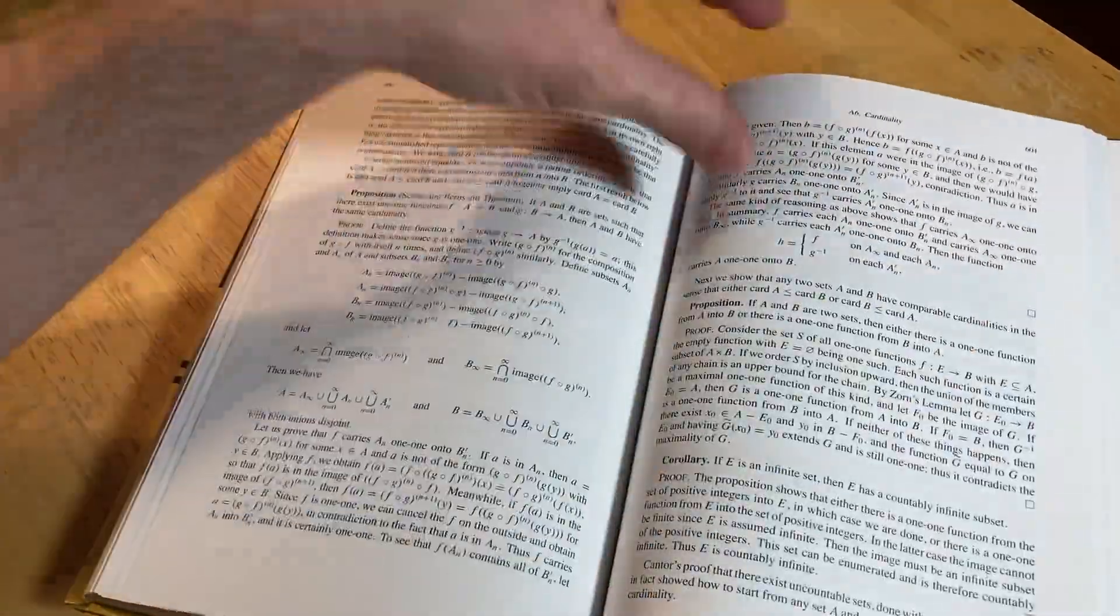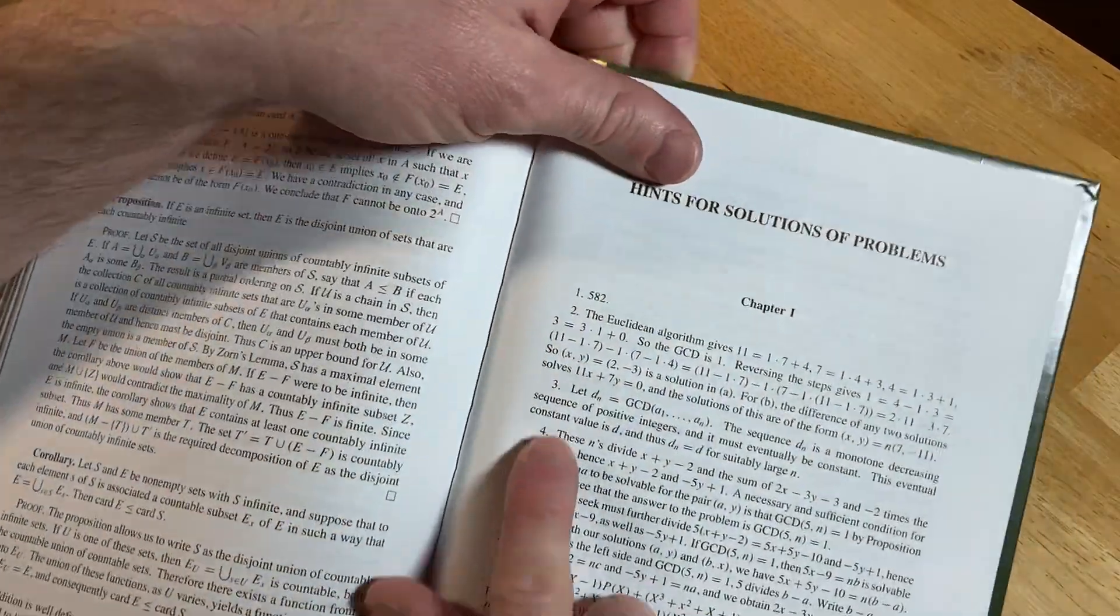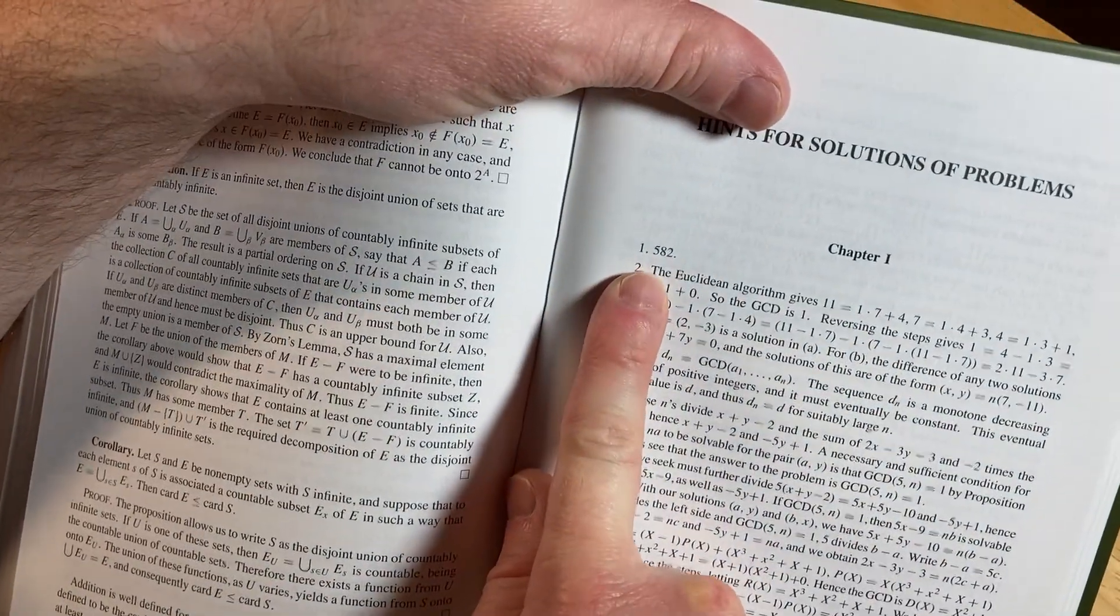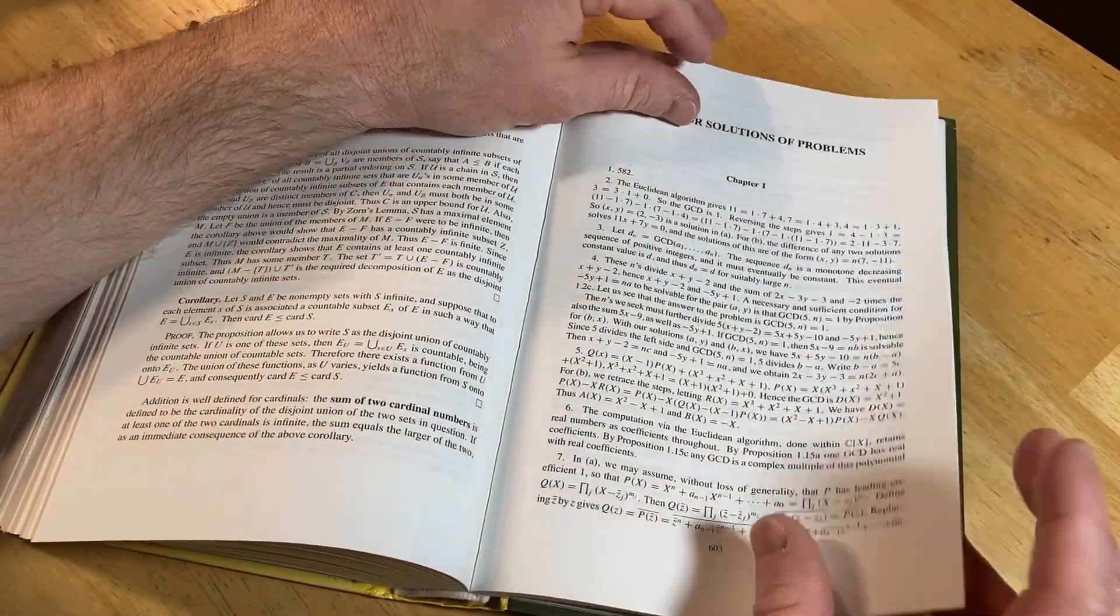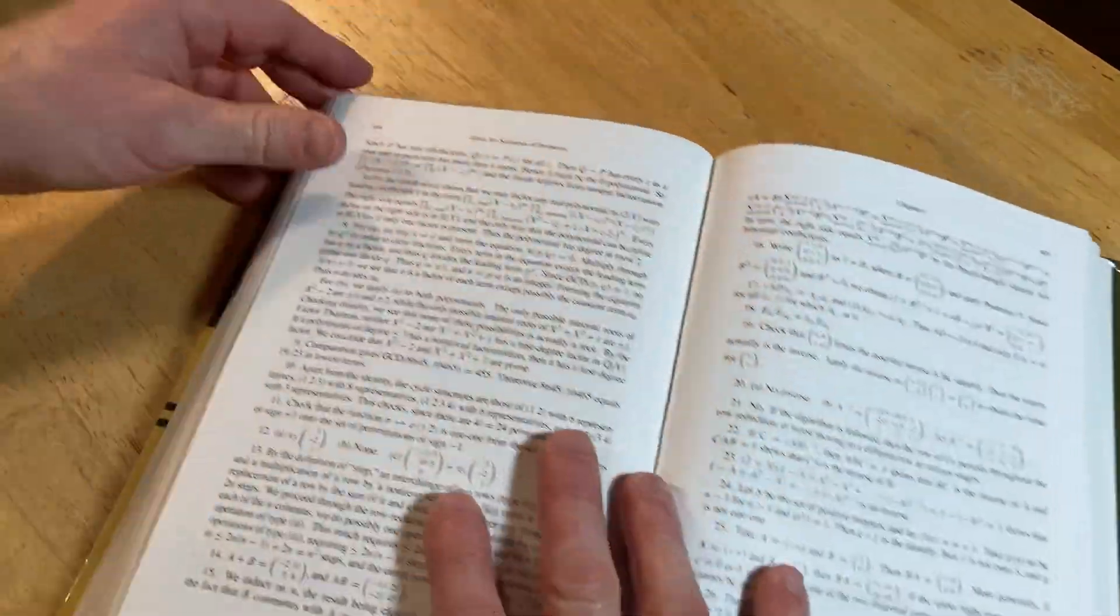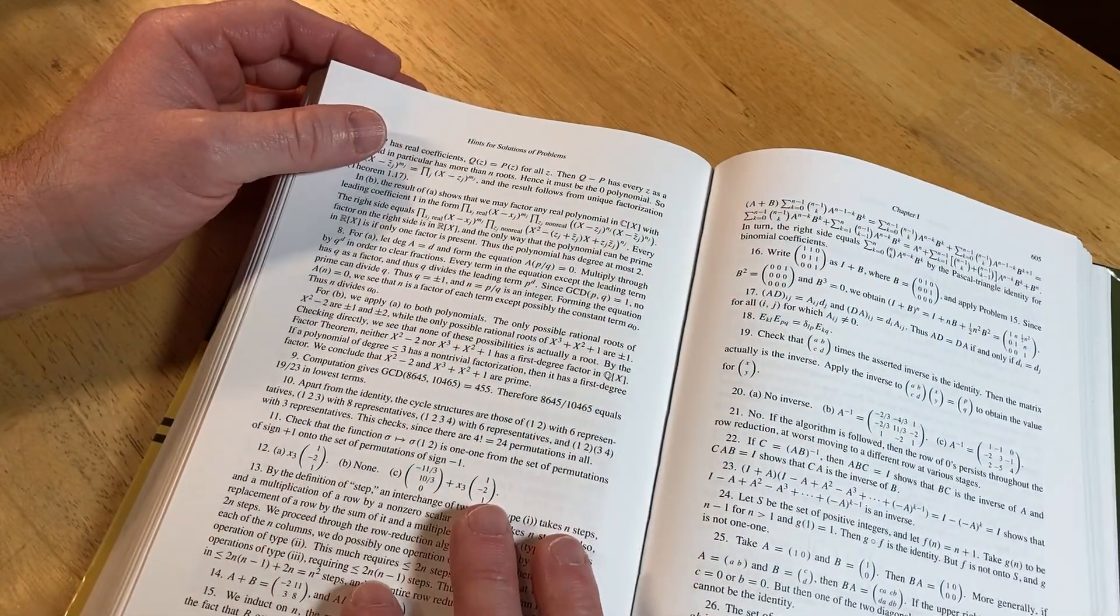So let's look here. It's got some appendices. So you have hints for solutions of problems. So it's got a lot, it doesn't have everything though. But you see that it does actually have some full or partially full solutions, which a lot of other books don't have.